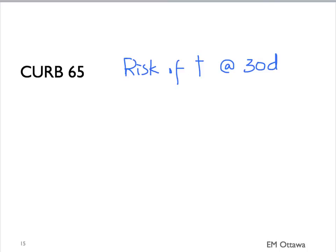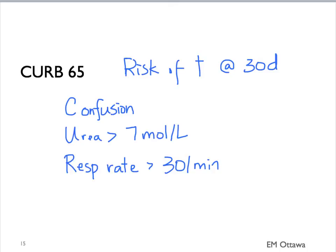It stands for Confusion, Urea more than 7 millimoles per liter, the R stands for Respiratory rate more than 30 per minute, B stands for Blood pressure either a systolic less than 90 or a diastolic less than 60, 65 stands for Age greater or equal to 65 years old.